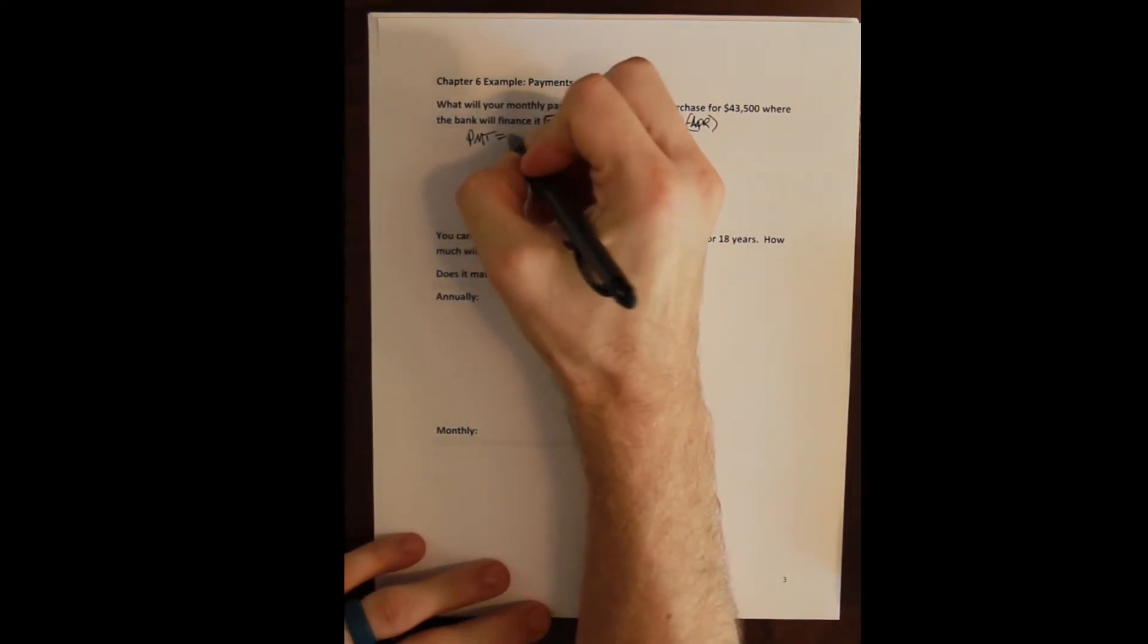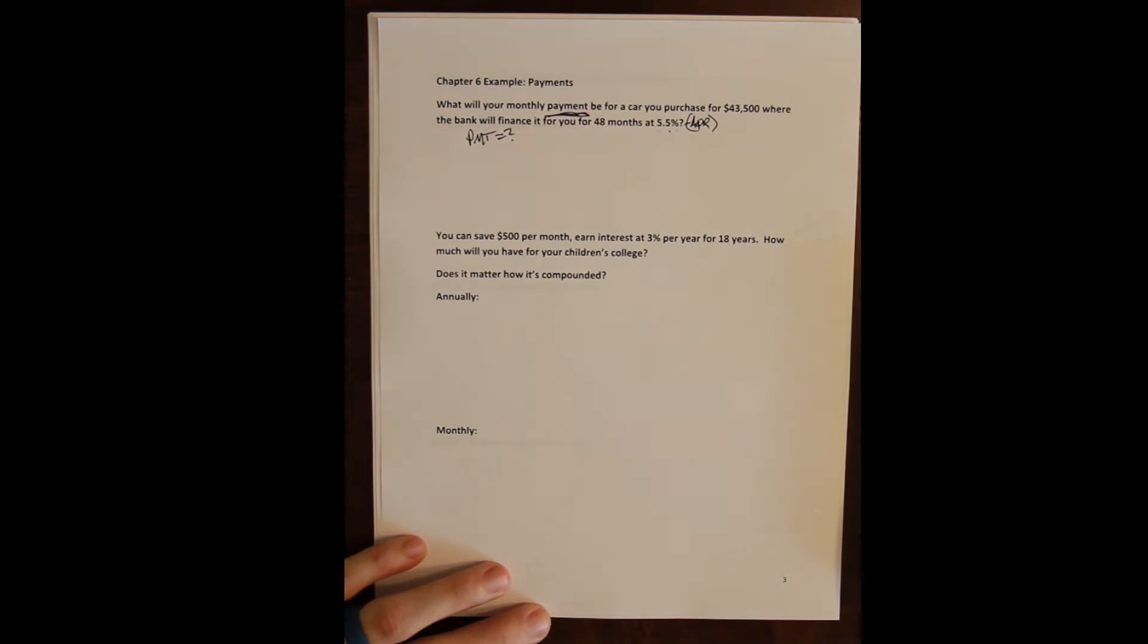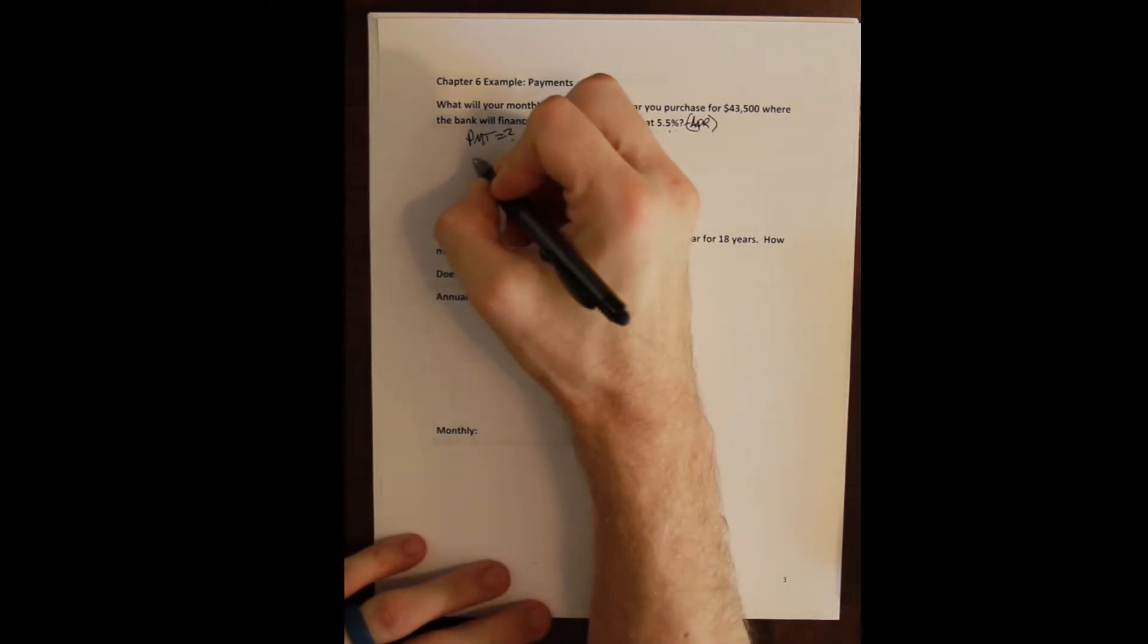Here we're trying to solve for the payment. So that's what we don't know. In order to solve for one of the inputs to the problem we need the other inputs. We can only have one unknown in the formula.